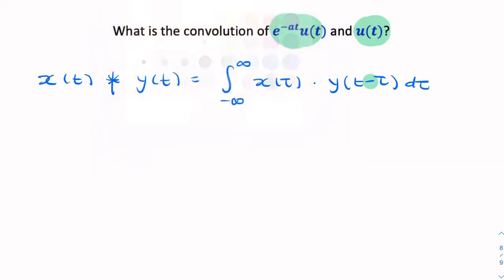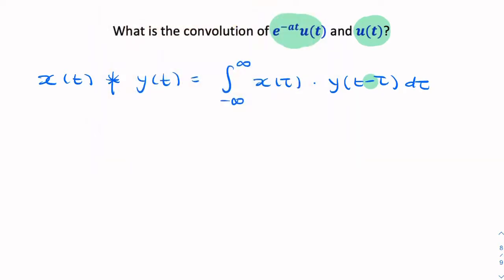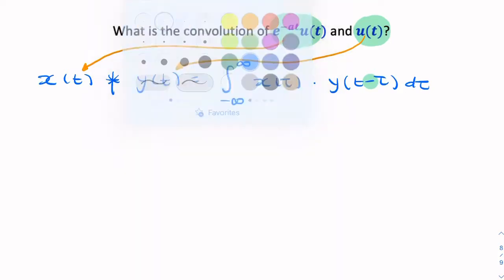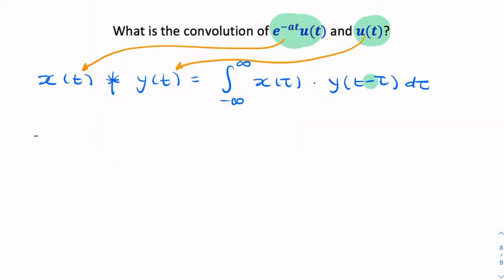So in this case it doesn't matter which one we choose, but if we choose this to be our x, then this will be our y. So the integration will look something like this: e to the power minus a tau, so we're replacing t with tau, times u of tau times u of t minus tau d tau.